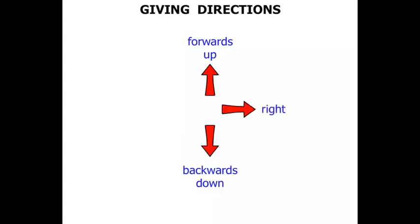In this lesson we do some work on giving directions. Now this arrow is pointing forwards or up. What about this arrow? We could say that it's pointing backwards or down. This arrow is pointing to the right. And of course the opposite of right is if it's pointing to the left.